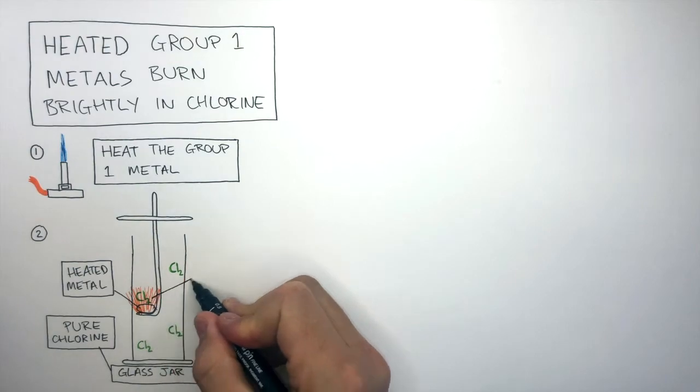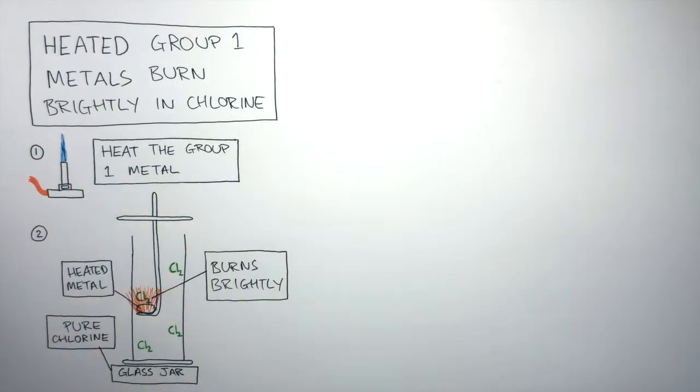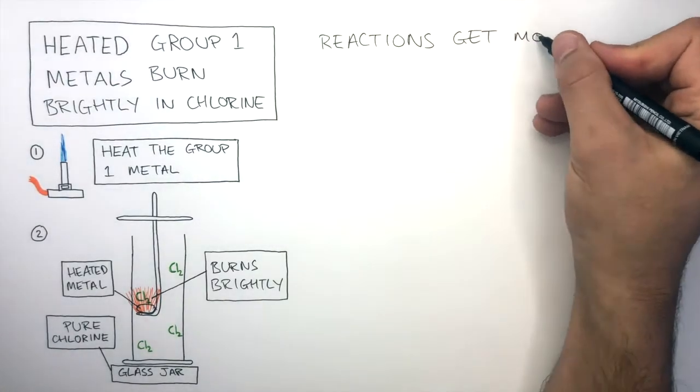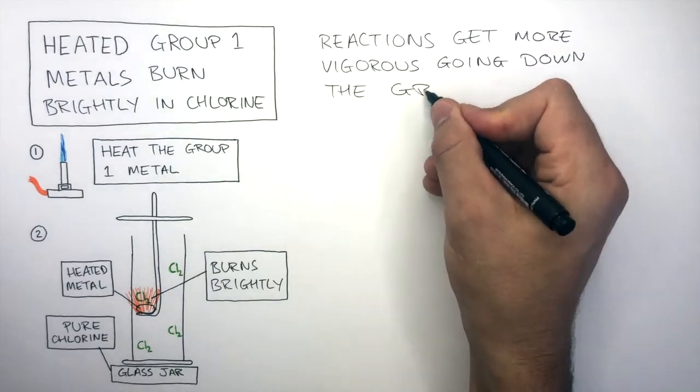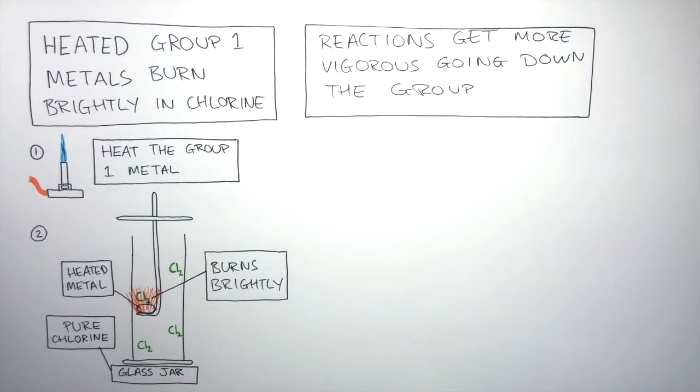The heated metal burns brightly because Group 1 metals are very reactive. These reactions are very vigorous. It's important to note that these reactions get more vigorous going down the group. This is due to the reactivity increasing down Group 1.